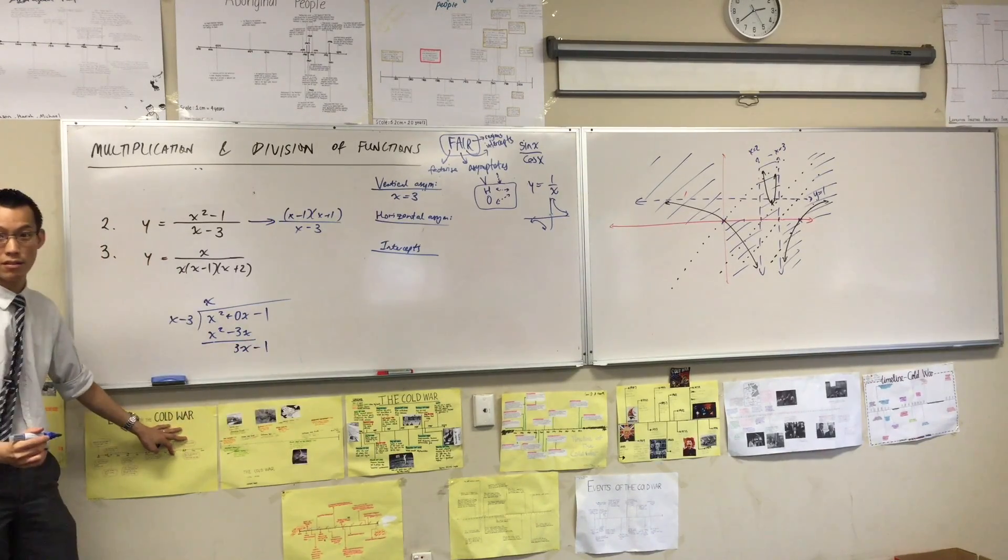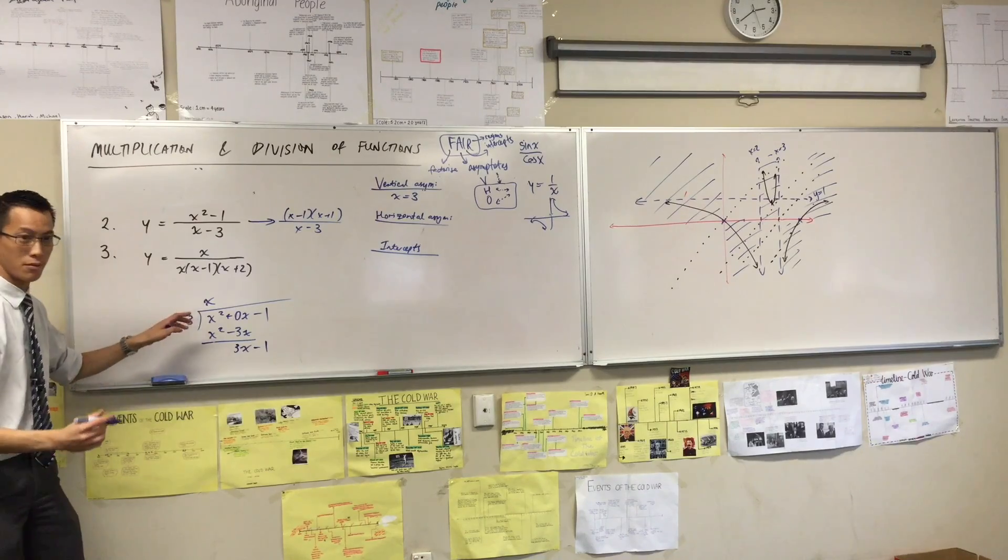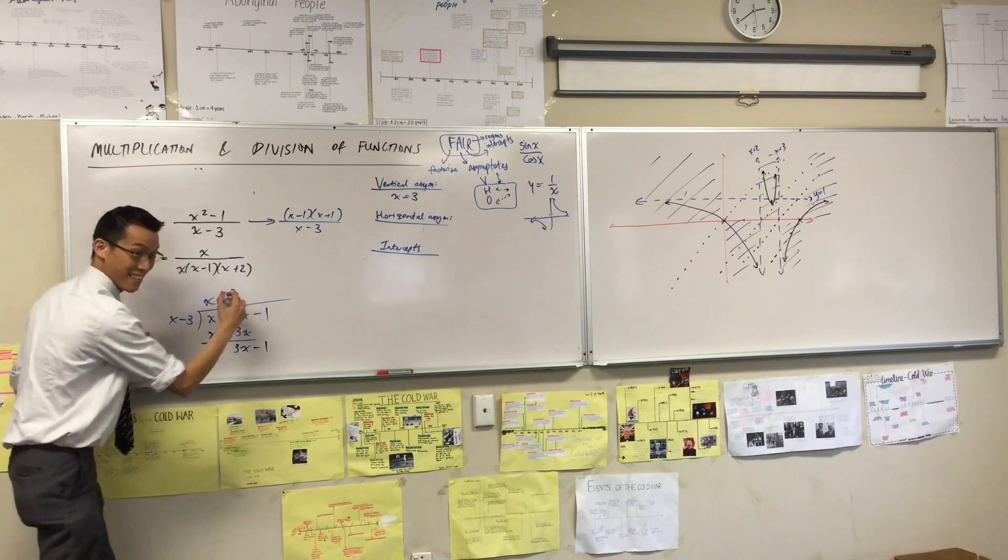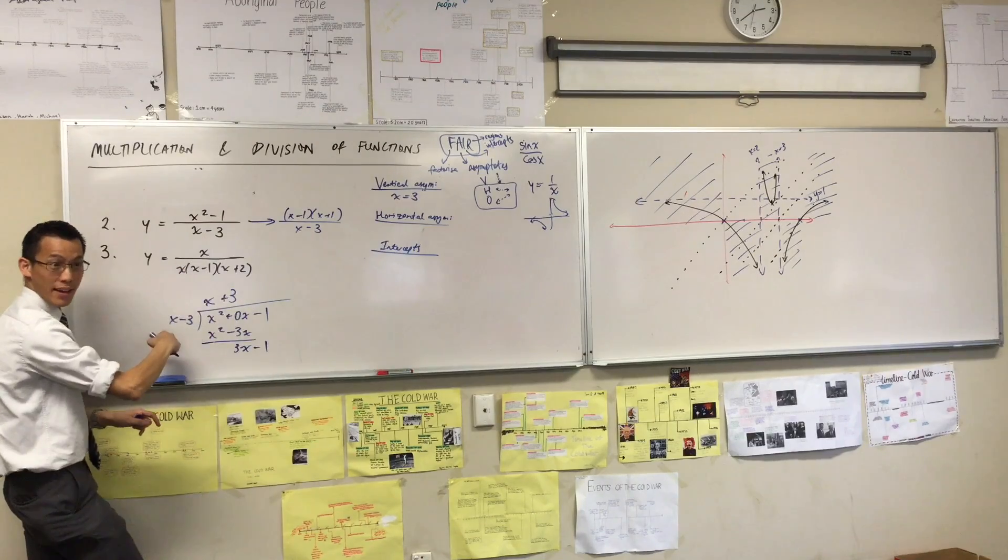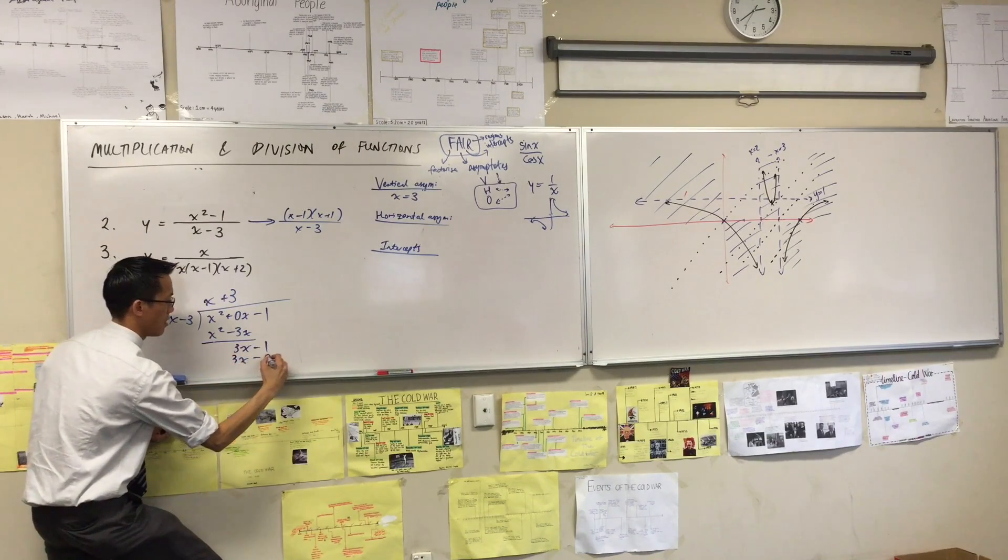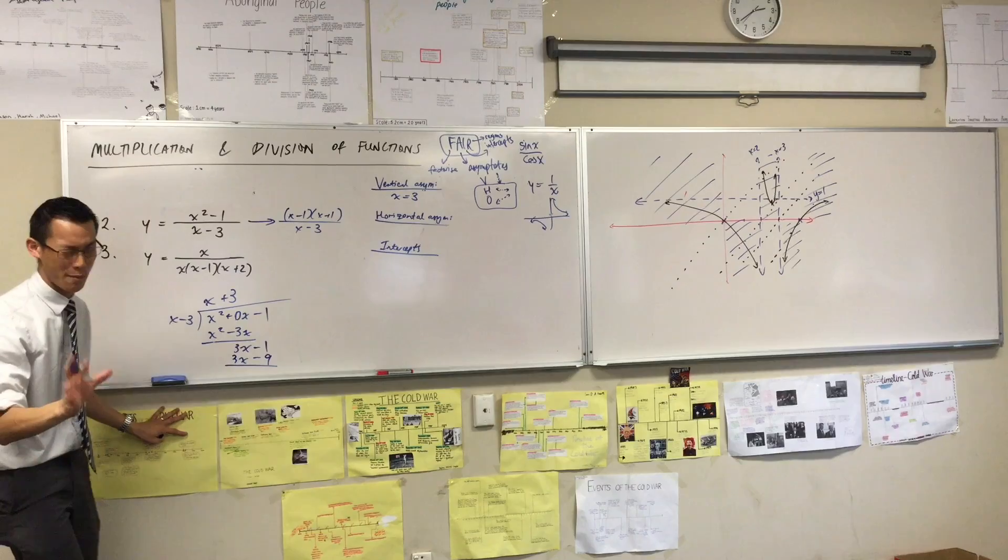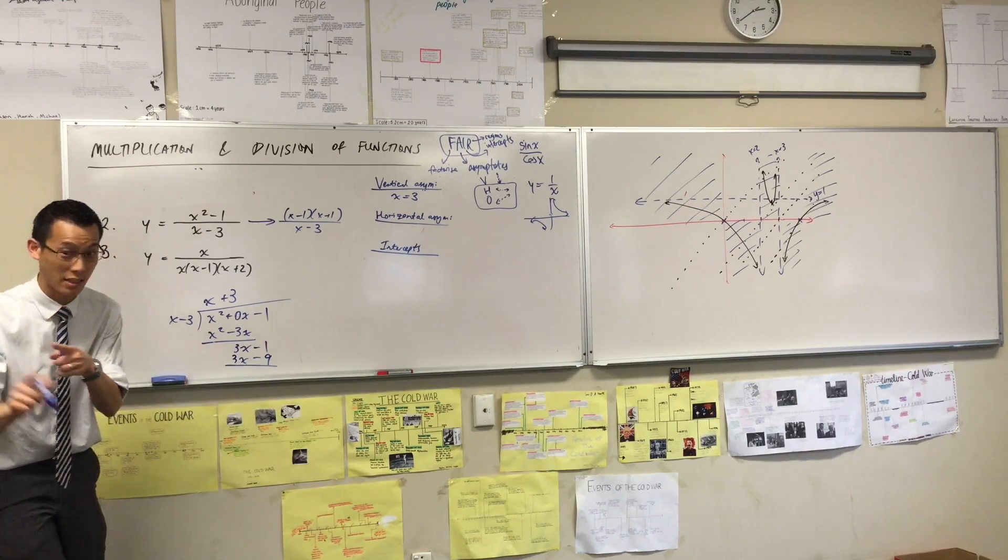Now what? Minus 1. Now what? Plus 3. Plus 3 up here, you multiply back which gives you 3x. Now be careful, so many negatives flying around, but you're subtracting here.